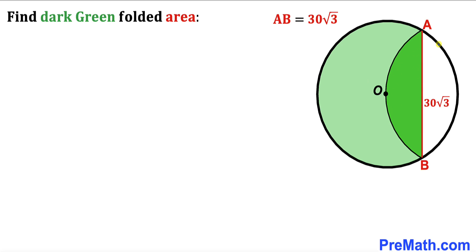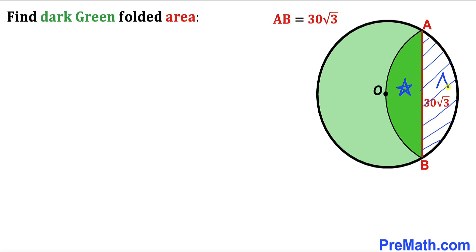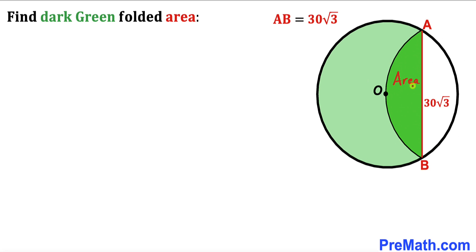Welcome to PreMath. In this video we have a circle with center O, where a part of the circle has been folded leftward, resulting in a dark shaded green region. Both of these regions are identical, and chord AB is 30 times the square root of 3 units. Our task is to calculate the area of this dark green shaded region.